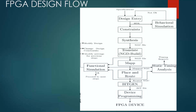The next step is place and route. How you place the blocks plays a very important role — for example, placing blocks near to IO saves time but may have other trade-offs. It is up to the place and route tool to find the optimal placement for each block on the FPGA.